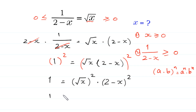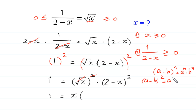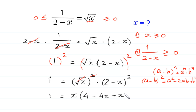Next, 1 equals — this square cancels with this square root, leaving x times — and according to the algebraic identity, a minus b whole squared equals a squared minus 2ab plus b squared. So 2 minus x whole squared equals 4 minus 4x plus x squared.